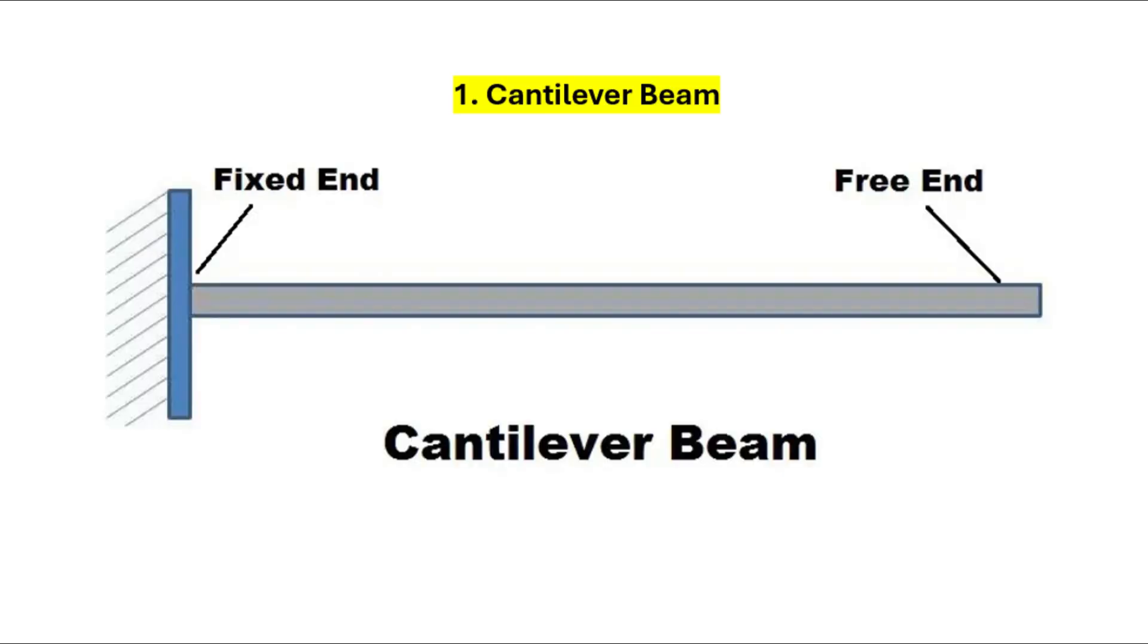1. Cantilever beam. This beam is fixed at one end and free at the other. It's great for balconies, diving boards, and overhanging roofs.